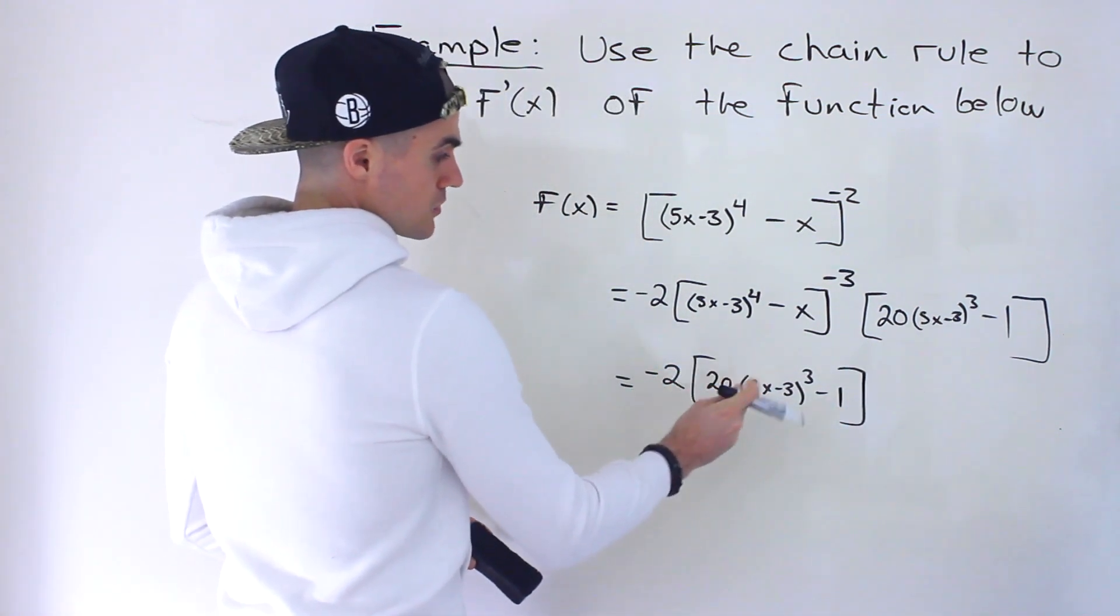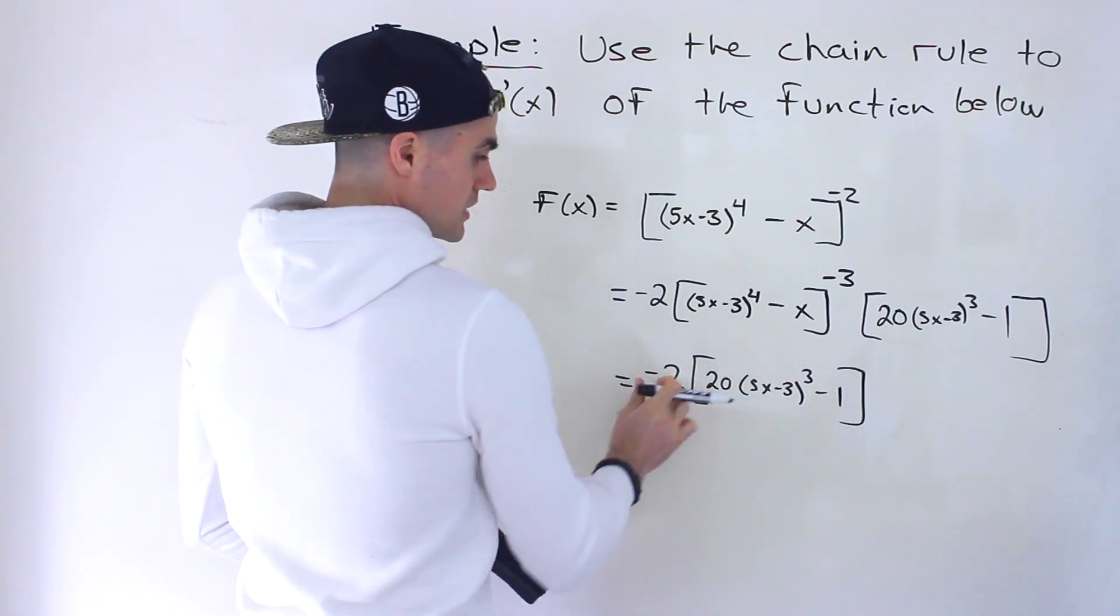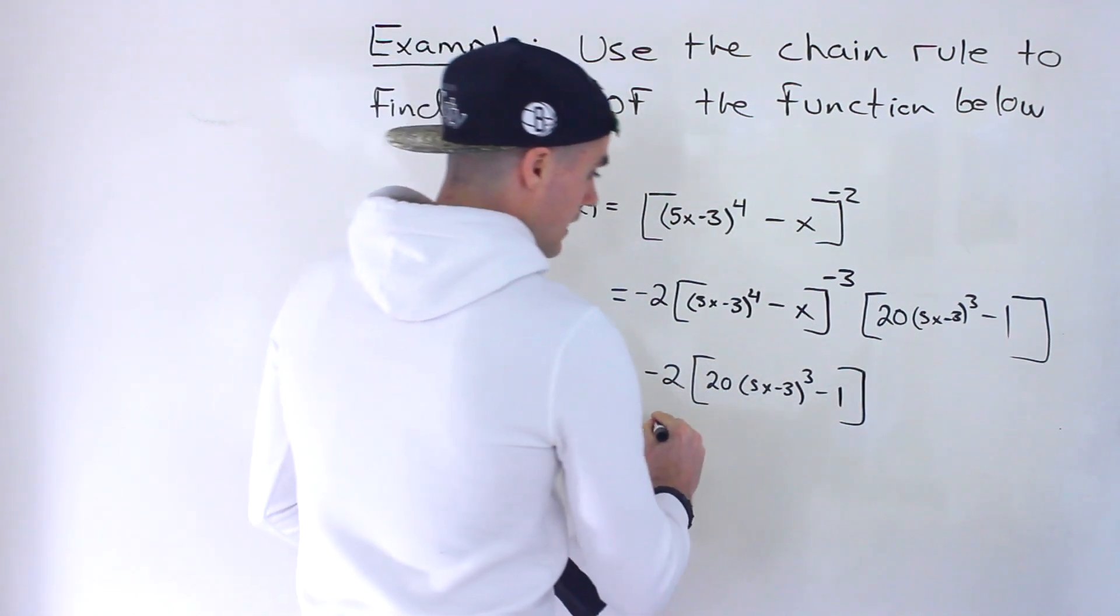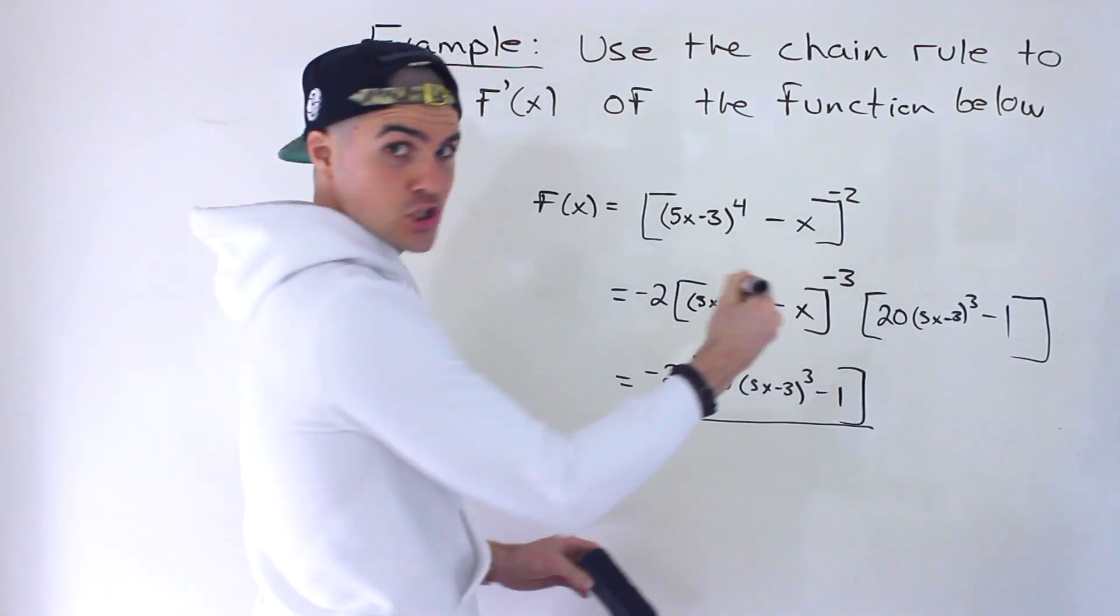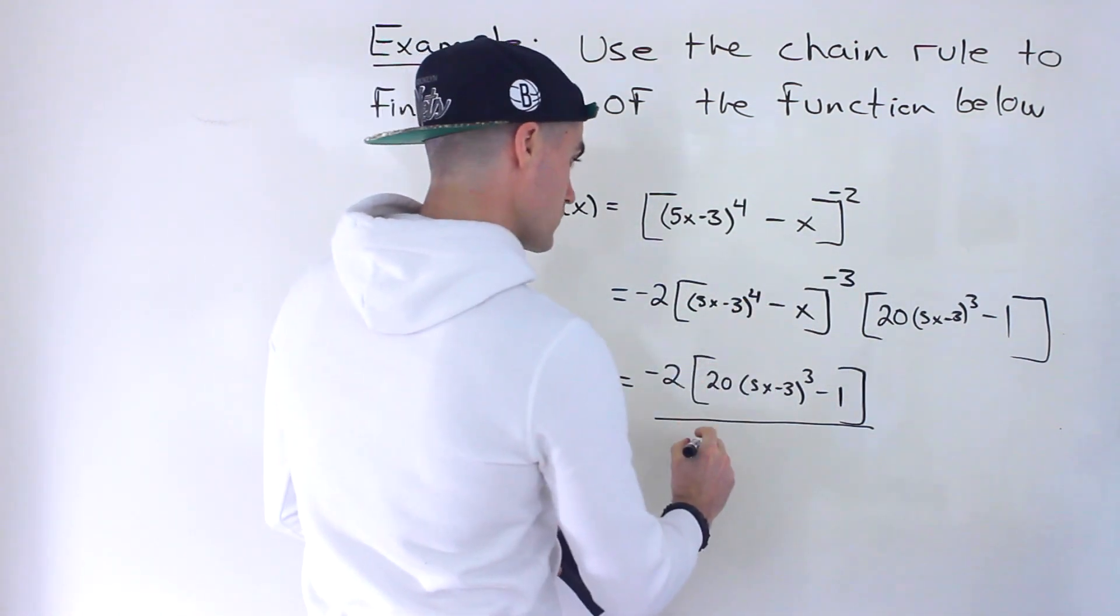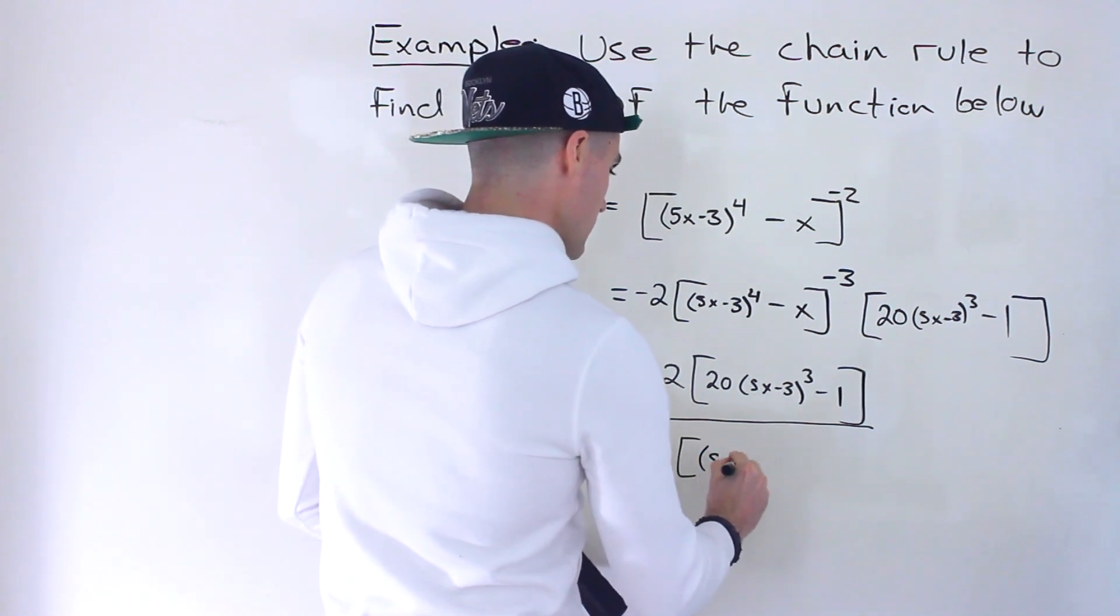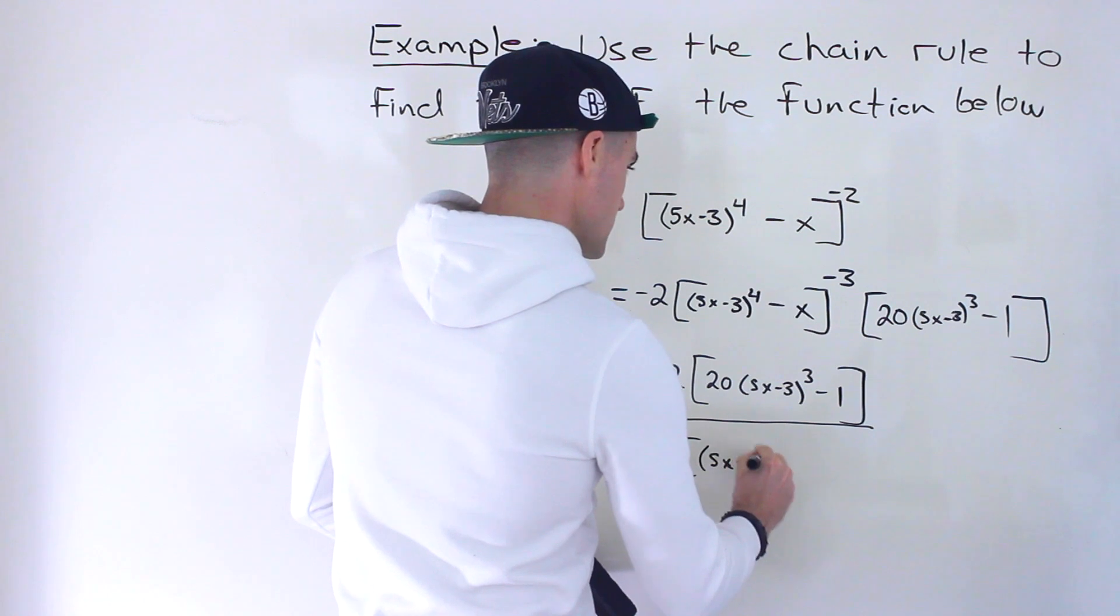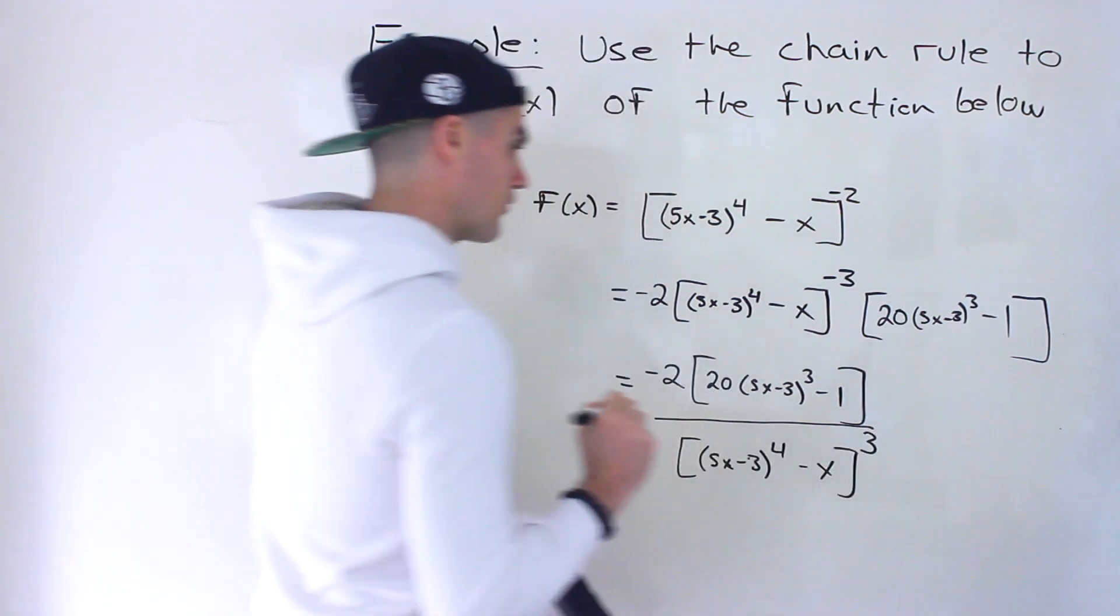You could also take this negative 2, maybe distribute it. So you'd have negative 40 and then plus 2. But I'm just going to keep it factored on the outside. And then that's going to be all over this brought to the denominator. And we're going to change that exponent to a positive. So we would end up with [(5x - 3)^4 - x]^3.